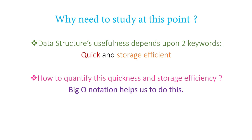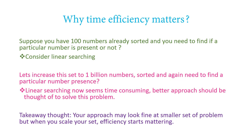In the previous tutorial I emphasized two keywords: your algorithm, your operations, your steps should be quick, and second, they should be storage efficient. So operations and algorithms that you write on a data structure should be as quick and storage efficient as possible. To quantify how quick and storage efficient a given operation is, here comes the role of Big O notation, which helps us quantify it. We are studying Big O notation to compare different operations on data structures and understand how much time those operations are going to take.